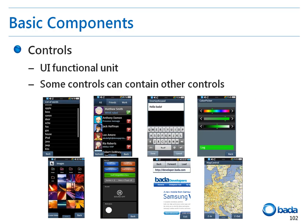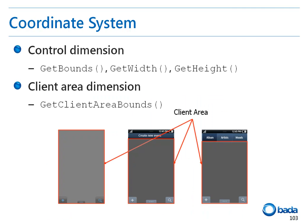A control can be regarded as a unit of a UI function. For example, a button, slide, text label, and list are all controls. Although some controls can contain another control within themselves, in general, a set of controls perform a function.